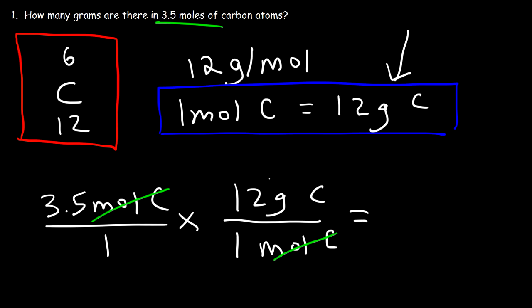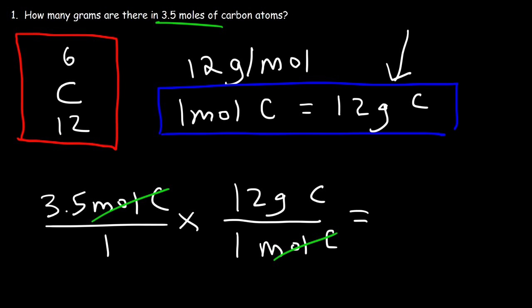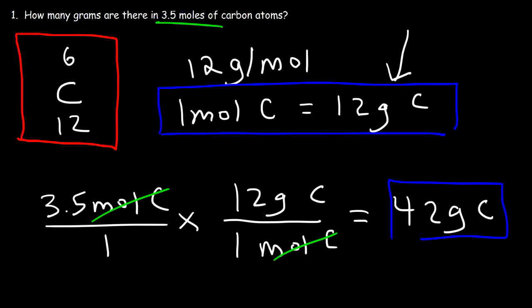Whenever you have two numbers on top, you need to multiply. So it's going to be 3.5 times 12, which equals 42 grams of carbon. So there are 42 grams of carbon in 3.5 moles of carbon atoms. That wasn't too bad!